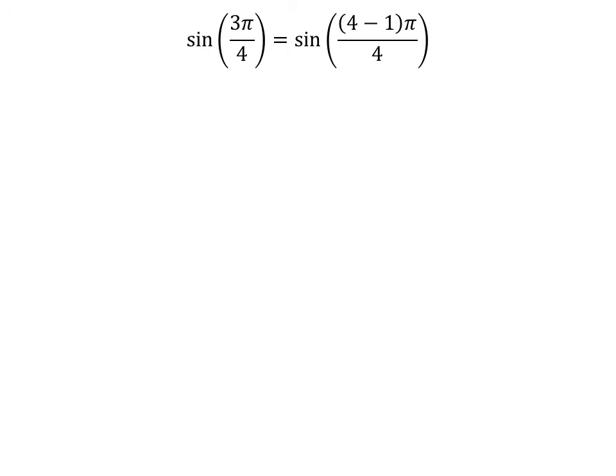Here, I have explained the second method. We know that 3 is equal to 4 minus 1, so sine of 3 times pi upon 4 is equal to sine of 4 minus 1 times pi upon 4.